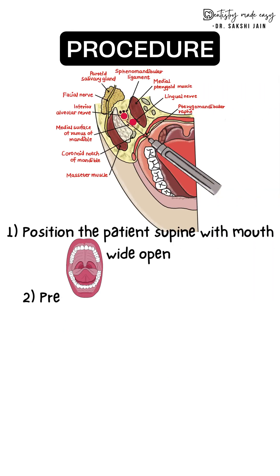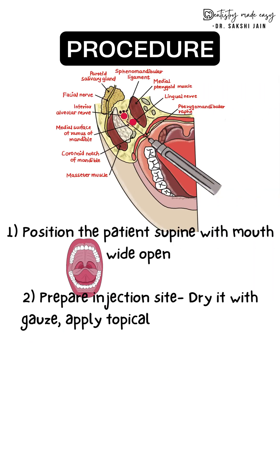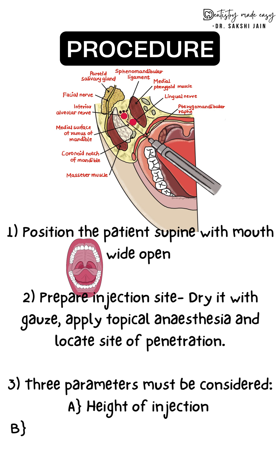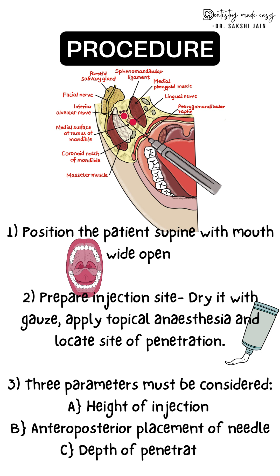For the procedure, the correct operator position is 8 o'clock for the right inferior alveolar nerve block and 10 o'clock for the left inferior alveolar nerve block. The patient's position should be supine or semi-supine, with the mouth opened wide.